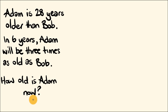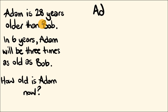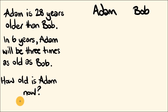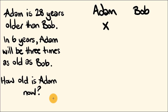The way we're going to solve this is we're going to build up an equation using all of this information and then solve it. We have Adam and we have Bob. What we're trying to work out — looking at that last sentence, how old is Adam now — we're going to call this value x. The thing we are trying to work out is x: how old Adam is right now.